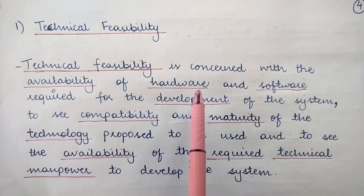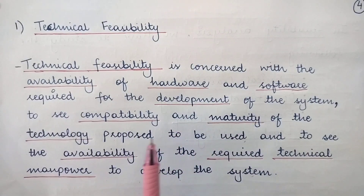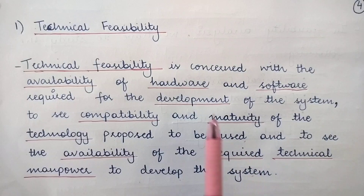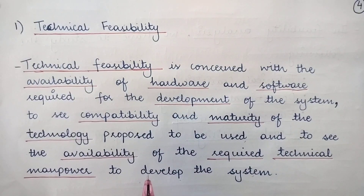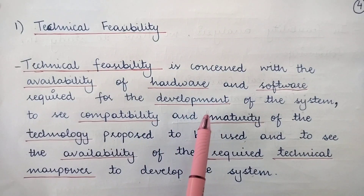We check whether the required hardware and software are available for development of the information system. We also check the compatibility and maturity of the proposed technology — how compatible and mature it is for the proposed system. We also see whether there is availability of required technical manpower, because even if the technology is compatible and mature, without skilled and trained people it is not possible to develop the information system.